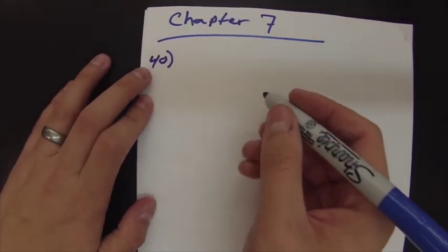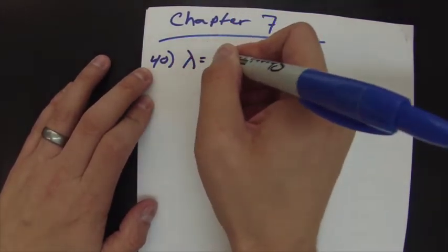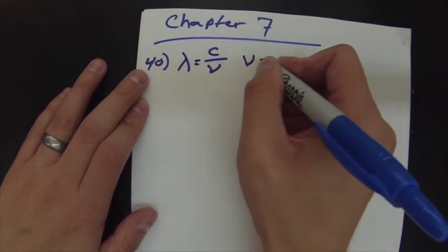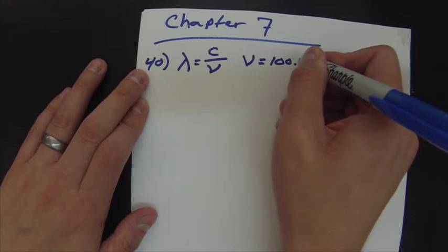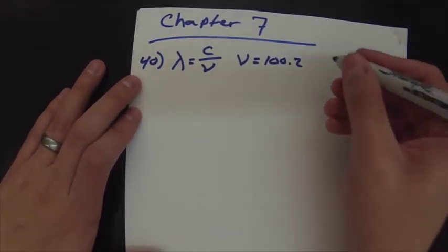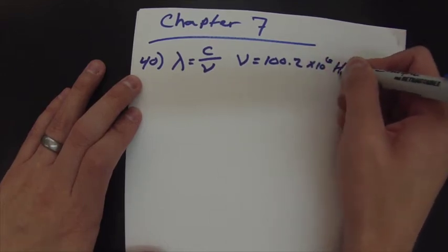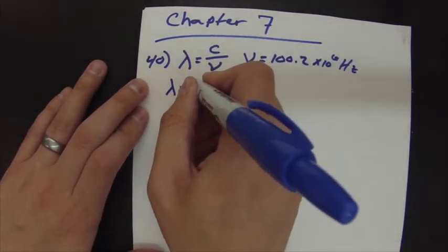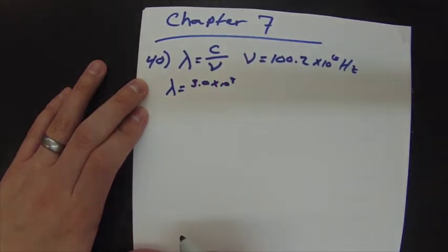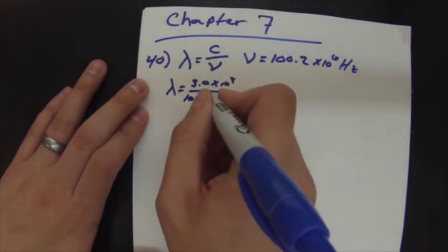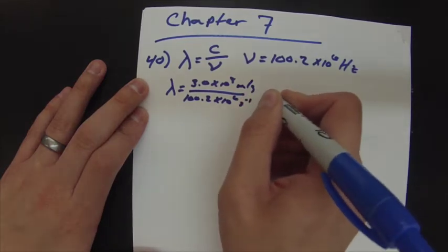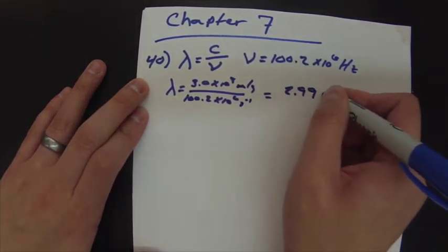The equation we're going to use is wavelength = c / frequency. We're given a frequency of 100.2 megahertz, which we need in hertz, so we multiply by 10 to the 6. Then just plug it into the equation: speed of light divided by frequency. Meters per second over inverse seconds gives you about 2.99 meters.